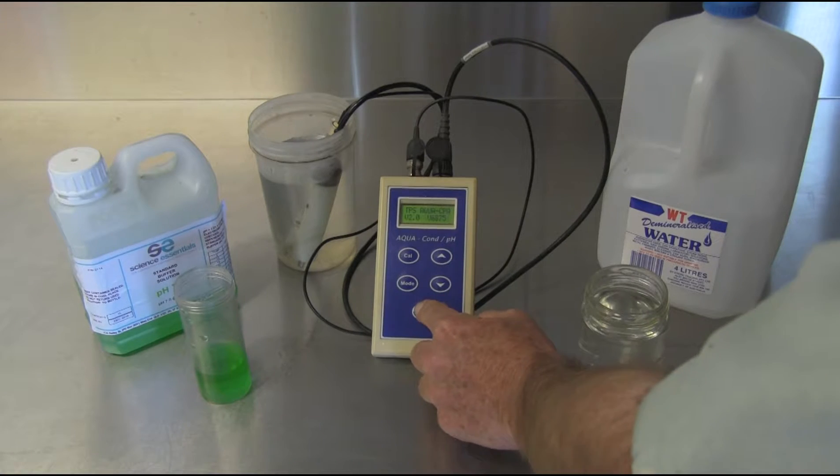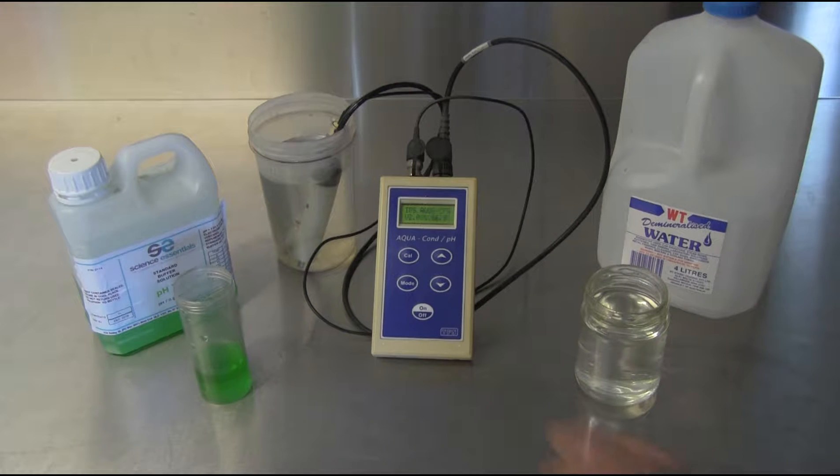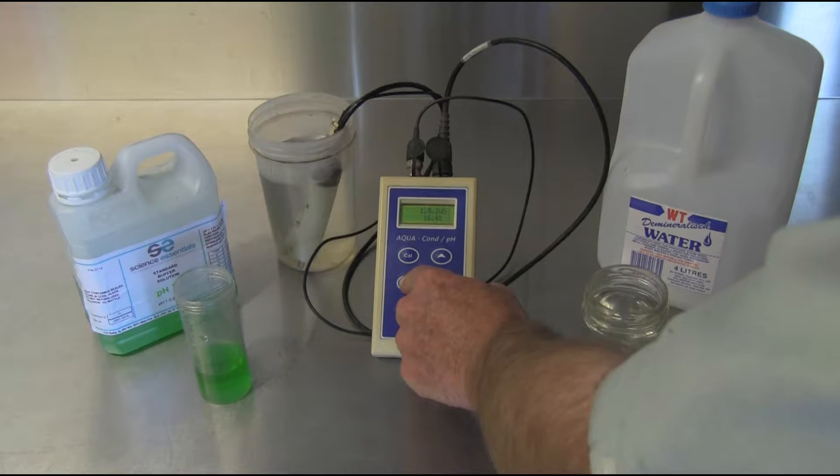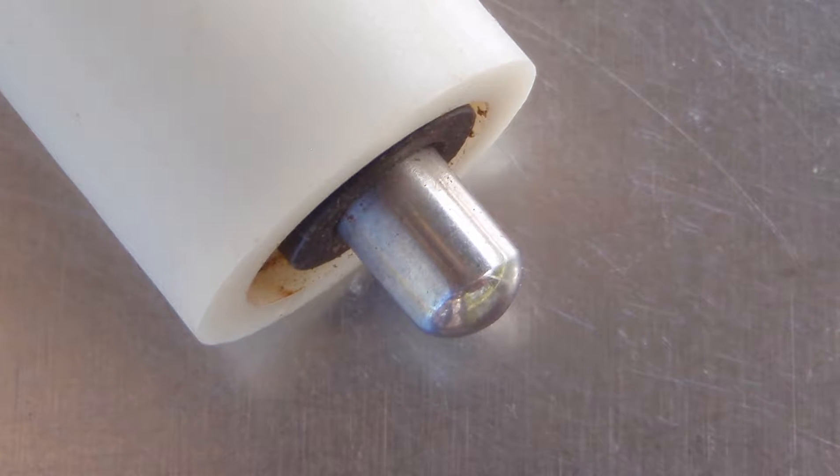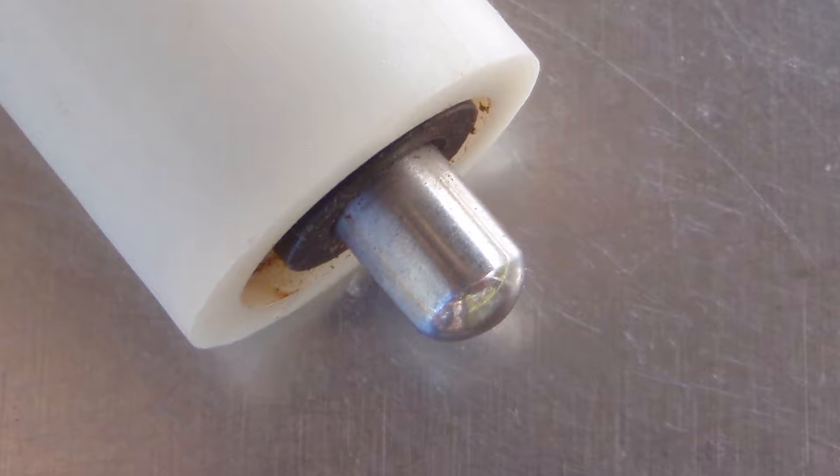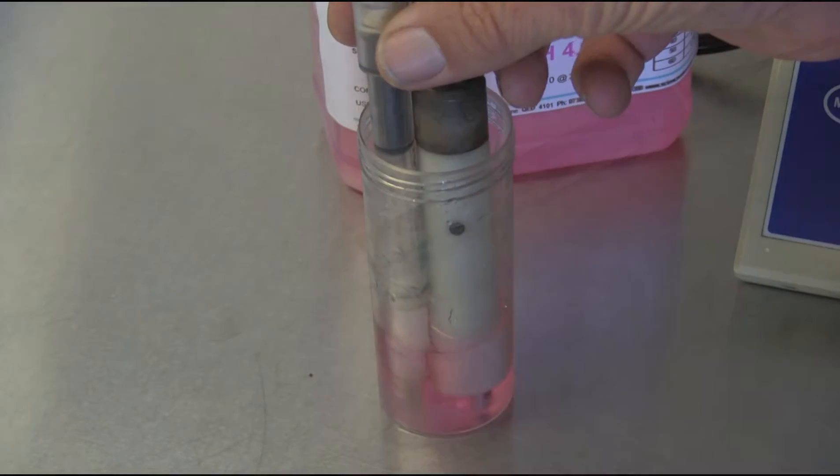Turn the meter on. Select the calibration mode and allow the readings to stabilize. For meters having automatic temperature compensation, the temperature probe must be in the same solution as the pH probe.